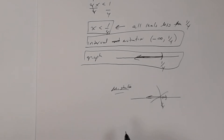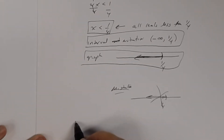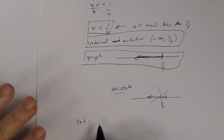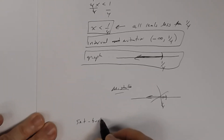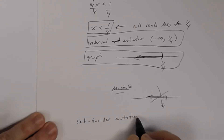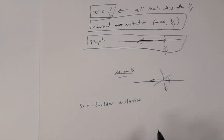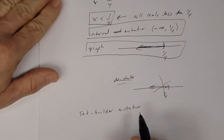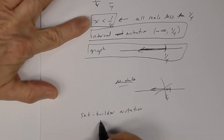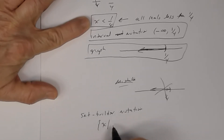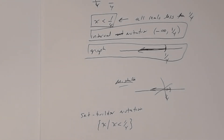If they ask for set-builder notation, remember from a previous lesson: you write the set of x's such that x is less than 1/4. Use the brace to represent the set, a vertical bar meaning 'such that,' then write x < 1/4, and close the brace. That's set-builder notation for this solution.